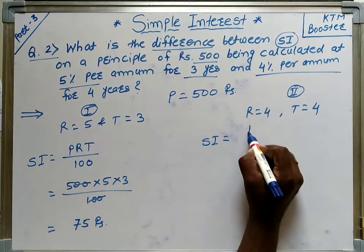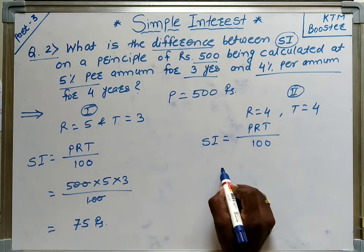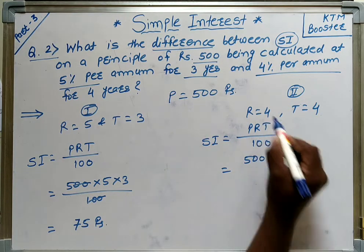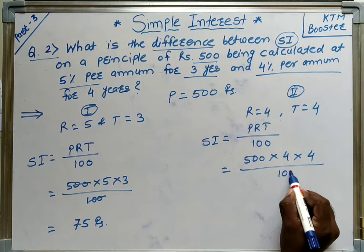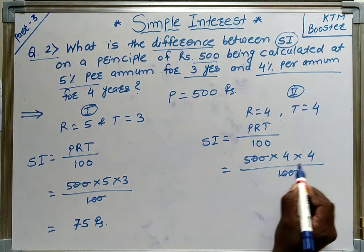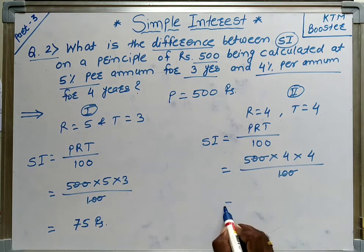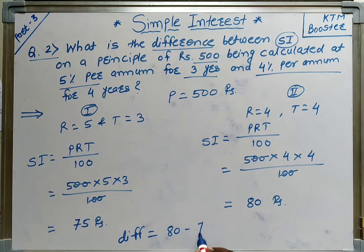For Case 2, SI equals P into R into T upon 100. P is 500, R is 4, T is 4 years, divided by 100. The zeros cancel, 4 into 4 is 16, 16 into 5 is 80. So SI for Case 2 is 80 rupees. The difference in SI is 80 minus 75, that is 5 rupees.